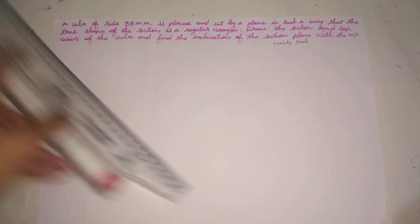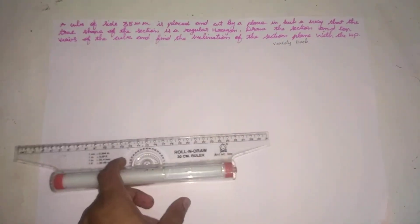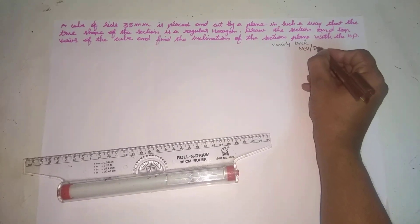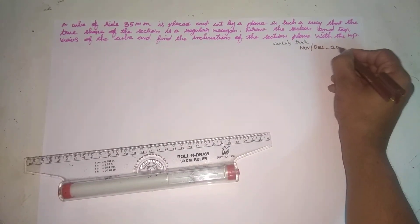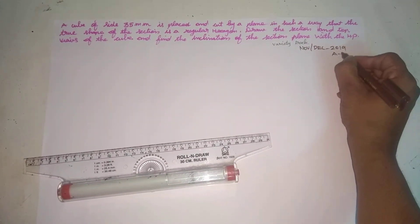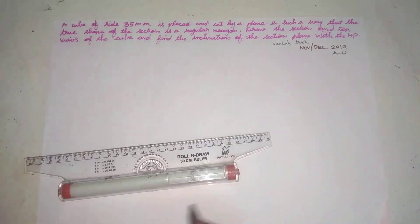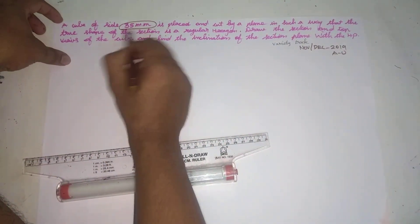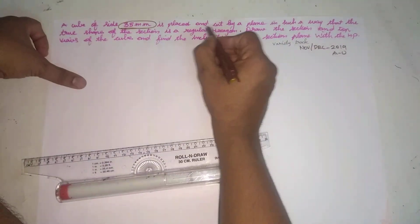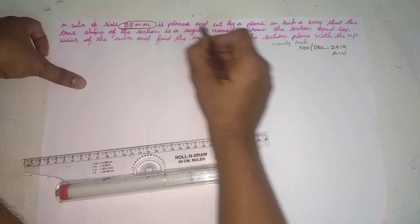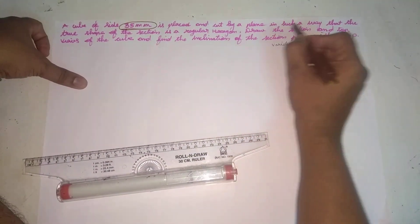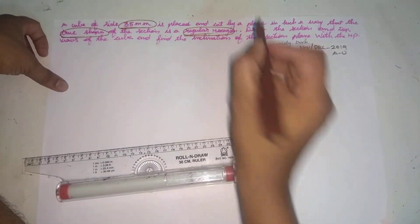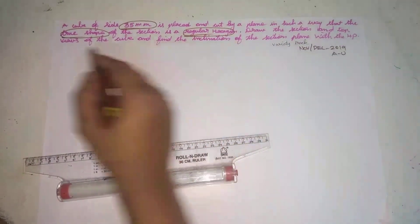Hi friends, welcome to Variety Track. This is November-December 2019. This is an important question: a cube of side 35mm is cut by a plane in such a way that the true shape of the section is a regular hexagon. Draw the section and top view.